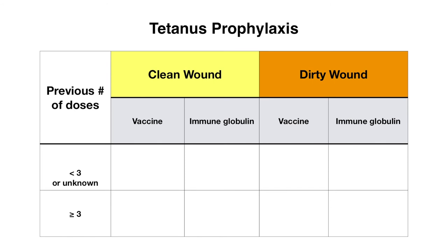If a patient comes in after stepping on a rusty nail or having an injury where you would be concerned about tetanus exposure, you need to consider whether or not they need tetanus prophylaxis depending on a few factors. First, determine how many doses of tetanus toxoid vaccine that person has received previously. Then separate the wound into a clean wound or a dirty wound. A dirty wound is defined as a wound contaminated with dirt, feces, soil, or saliva, and also includes puncture wounds, crushing injuries, burns, or frostbite. All other wounds are characterized as clean wounds.